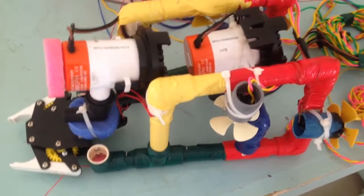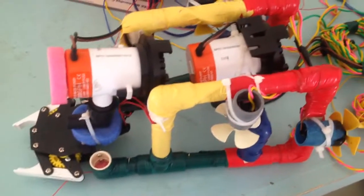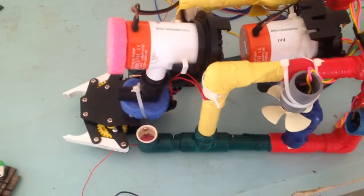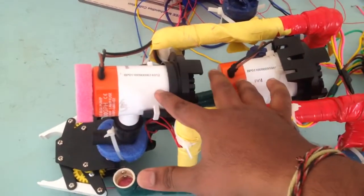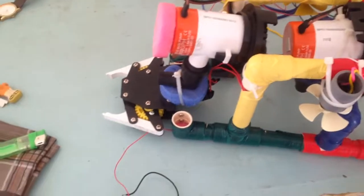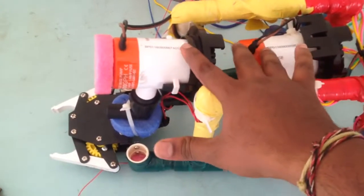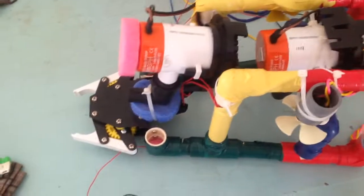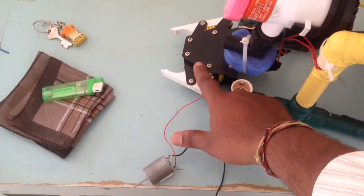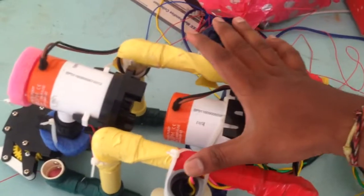This underwater robot consists of two vacuum blowers - not suckers but blowers which blow air. This is a clutcher used to catch hold of the fish, and these two motors are designed for upward and downward movement.